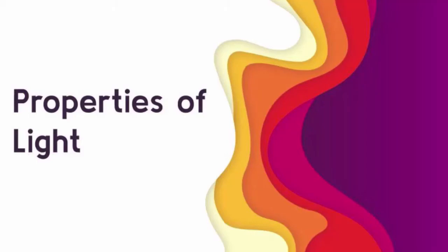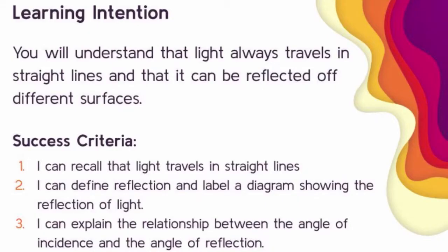In this lesson today you're going to learn about the different properties of light and we're going to look at two in particular. The learning intention is that you will understand that light always travels in straight lines and that it can be reflected off different surfaces.